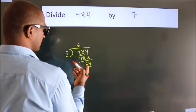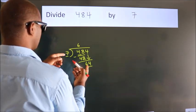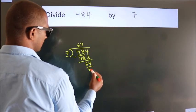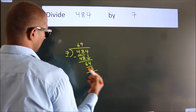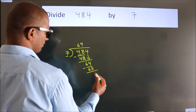A number close to 64 in 7 table is 7, 9, 63. Now, we subtract. We get 1.